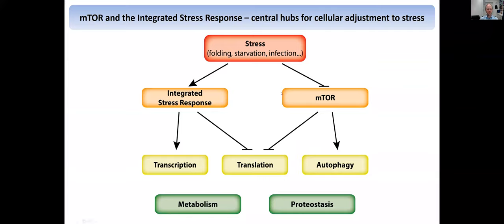We focused particularly on the integrated stress response and mTOR, which are really the two central hubs to adjust cells to a large number of different stresses — whether it's amino acid starvation, growth factor stimulation, infection, and many others. They typically activate or inhibit these two players. I'm sure you've heard of them — famous for mTOR is the activation of autophagy; in integrated stress response, a lot of changes in transcription. But the common thing really is that both of them block translation, which of course changes metabolism and proteostasis.